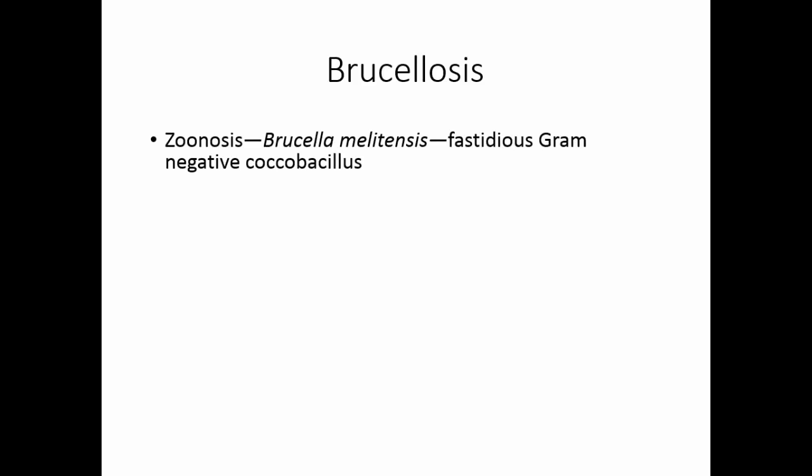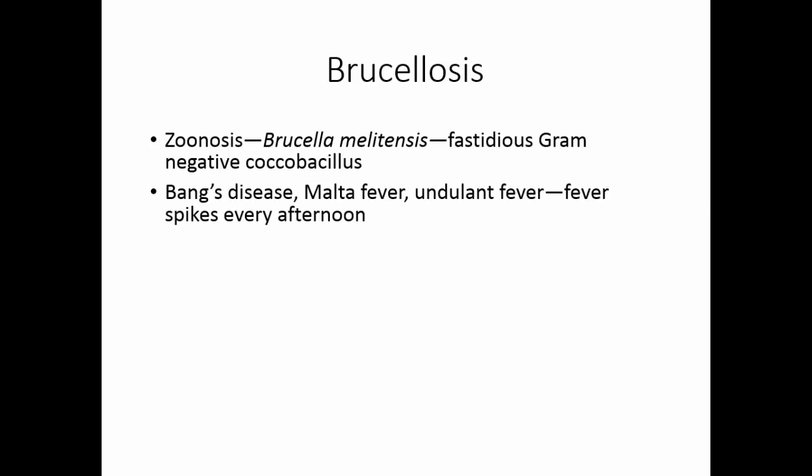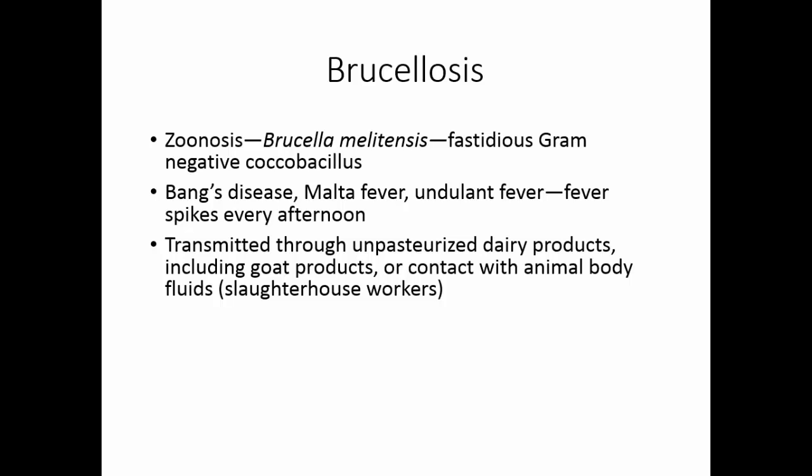Brucellosis is a zoonosis caused by the organism Brucella melitensis, a fastidious gram-negative coccobacillus. It causes Bang's disease in cattle. In humans, it causes Malta fever or undulant fever — so named because the fever comes and goes, tending to spike every afternoon and then drop to normal. It is typically transmitted through unpasteurized dairy products, including goat milk, or through contact with contaminated animal body fluids. Slaughterhouse workers are at risk.